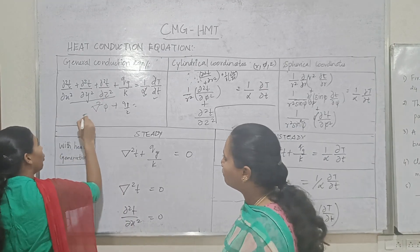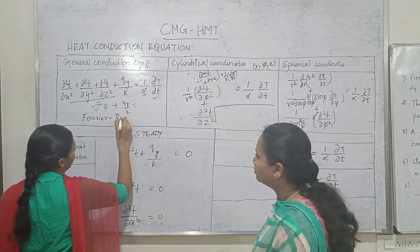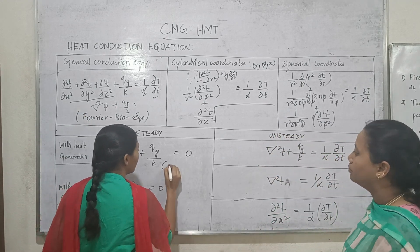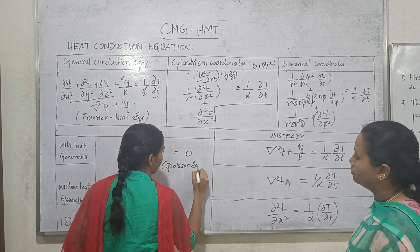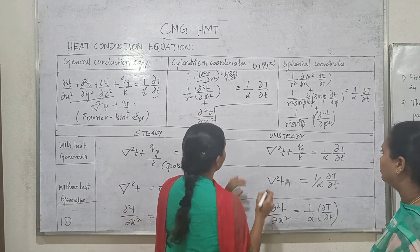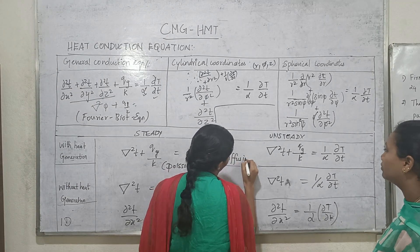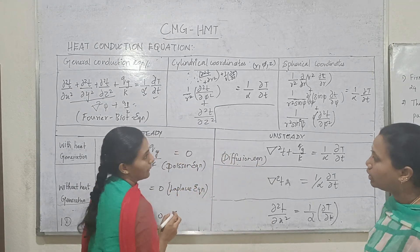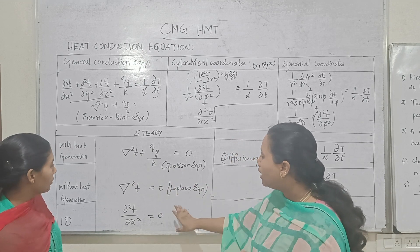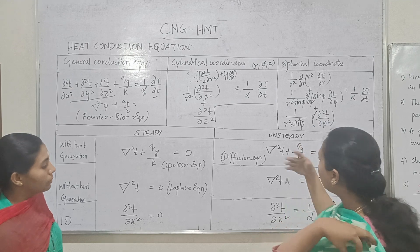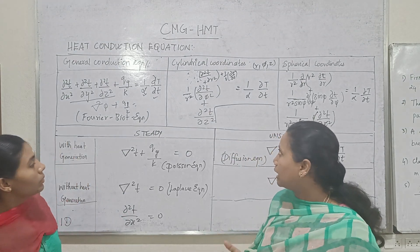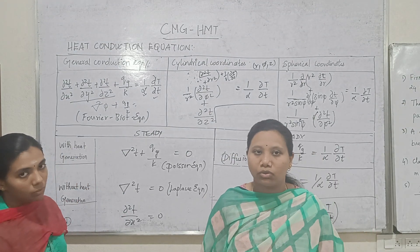The general conduction equation has several special forms. The Fourier-Biot equation applies with steady heat generation. With heat generation of the solver, it is called the Poisson equation. The Laplace equation applies when heat generation is zero. Without heat generation, this is the diffusion equation. Thank you very much for watching — please subscribe.